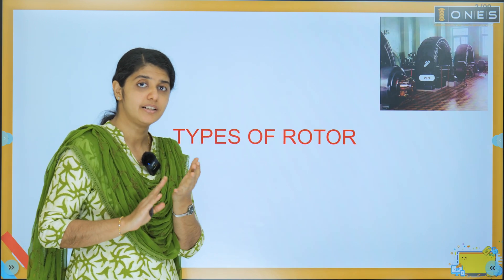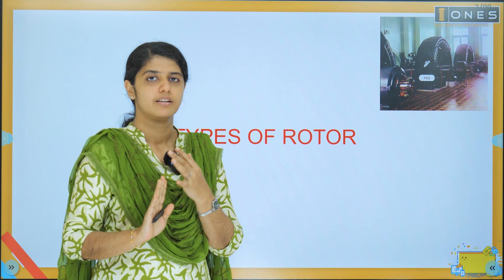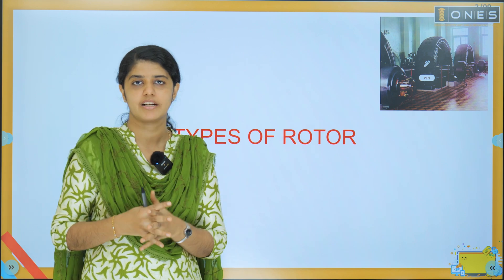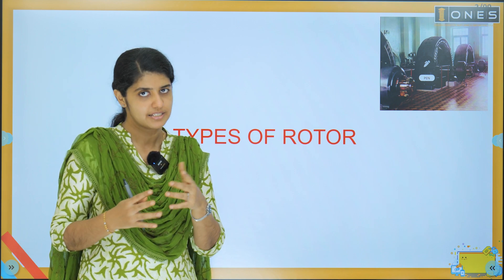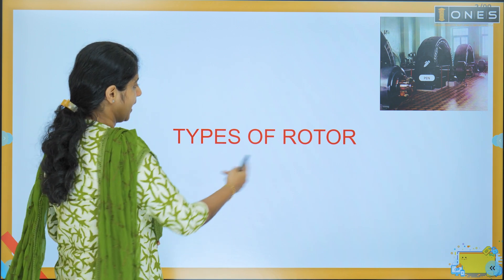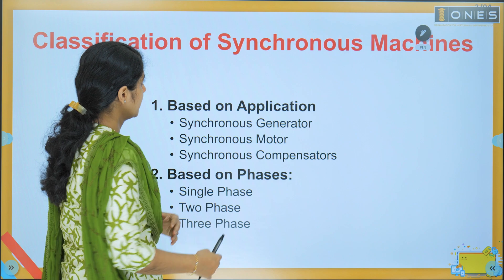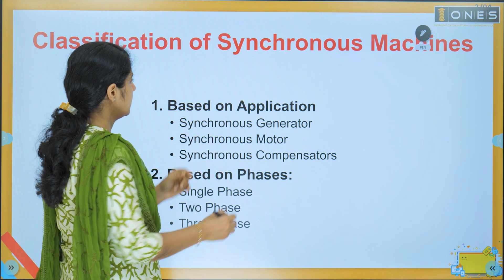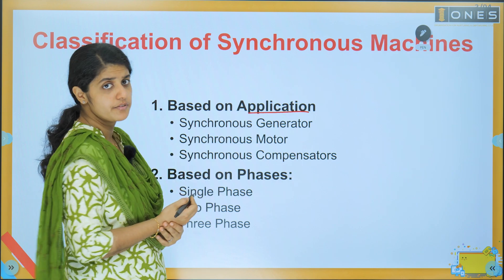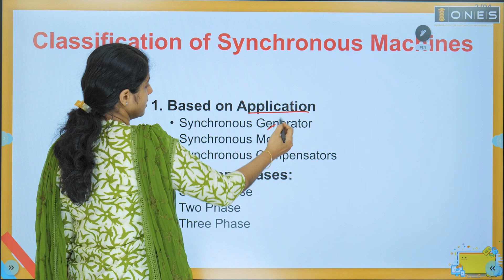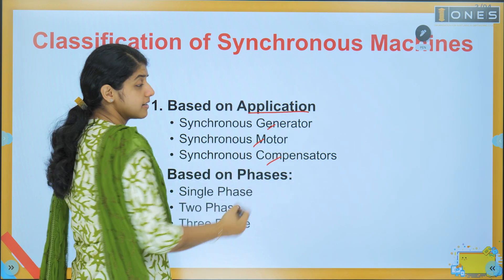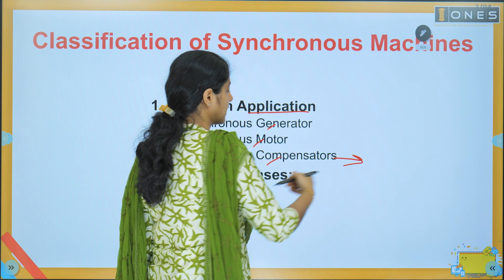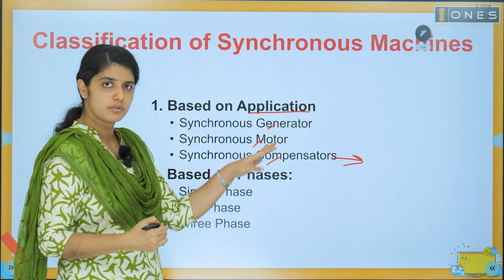We have two types of rotors available: salient and non-salient. These are the types of rotors in an alternator. We need to detail the two types. Let's start with the classification. We can classify the generator as single generator, single condenser, compensator, power factor, and single compensator.